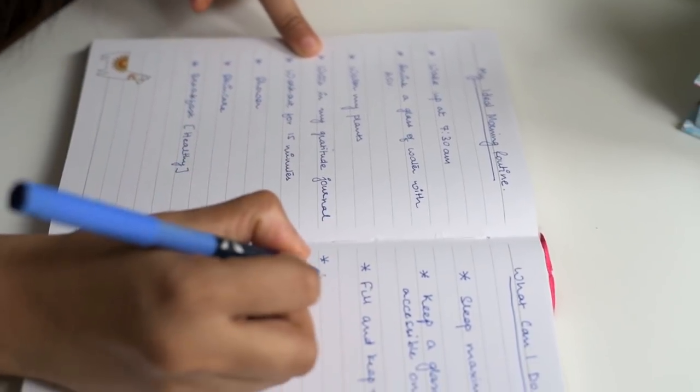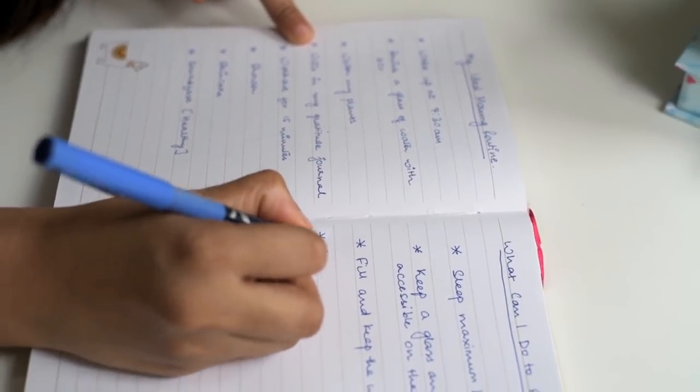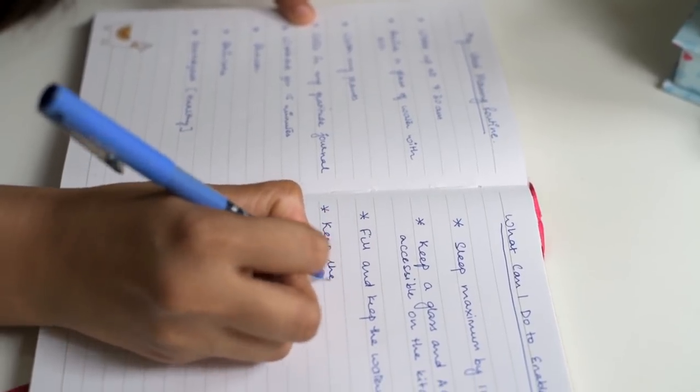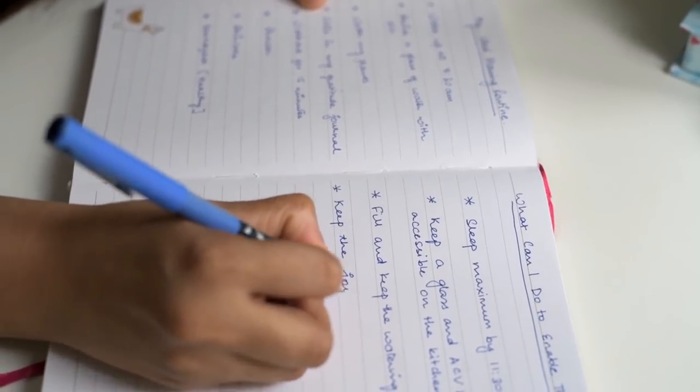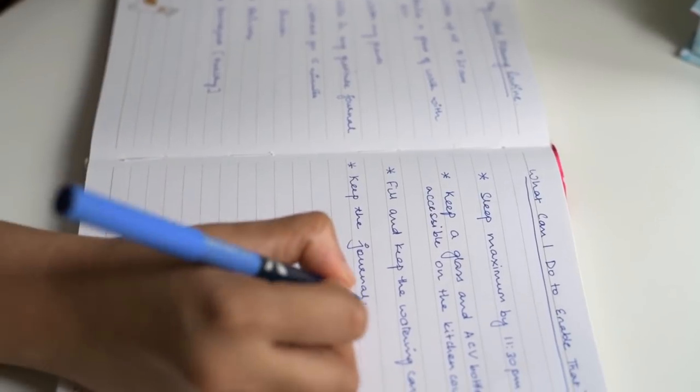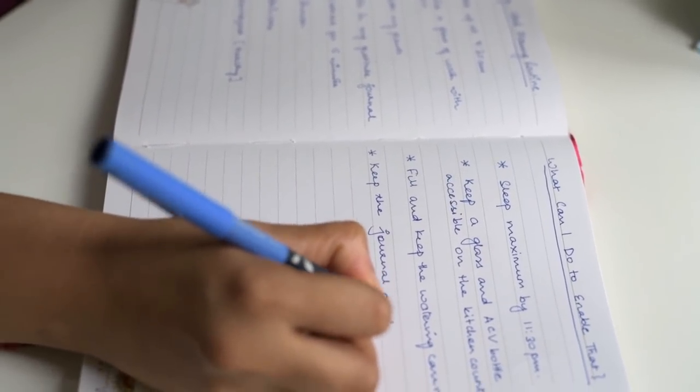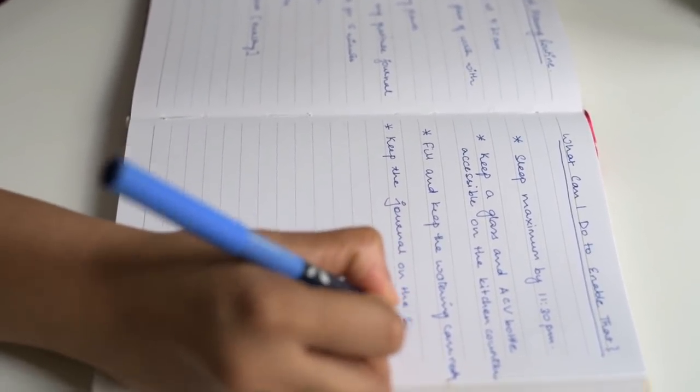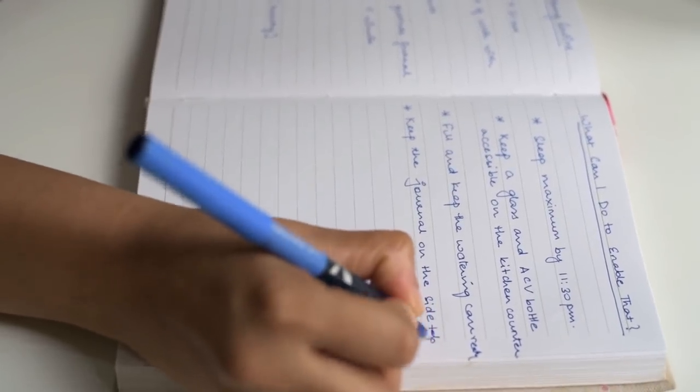Next, maybe you want to start writing in your gratitude journal, so a good enabler for that would be to keep the gratitude journal next to you on your side table so that when you wake up in the morning, it's available right next to you and you don't have to look around for it all around your house.